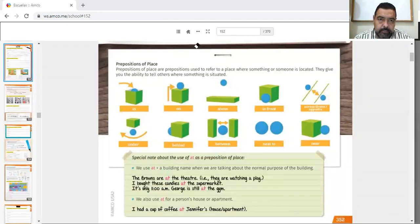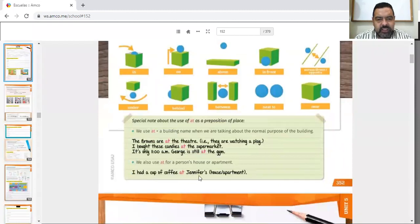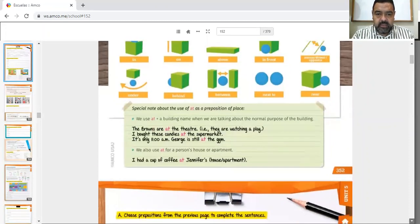Now, let me get my pointer back. Sorry kids. So I had a cup of tea at Jennifer's house. We also use at for a person's house or apartment. In this case, it's Jennifer's house. Cuando es la casa de alguien, dice ahí, also we use for a person's house or apartment. Si es la casa de alguien, también decimos el at. Sorry I'm going in Spanish, but I don't want you to finish this class without understanding something of it. That's why I explained some things in Spanish.